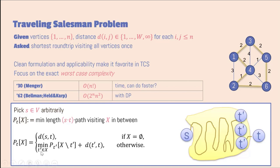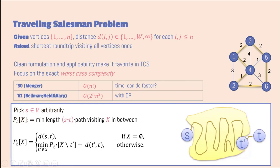We can cook up a recurrence that computes these entries P(t, X) in terms of P(t′, X′) where X′ is smaller than X. You compute all these table entries bottom-up, starting with the easiest subproblems where X is the empty set — that's just the direct distance from s to t. If X is not empty, we decide on a penultimate vertex of the path, go over all candidates for t′, and look up P(t′, X minus t′) plus the distance from t′ to t. This solves TSP in roughly 2-to-the-n time.